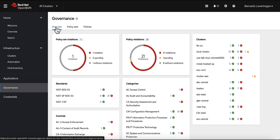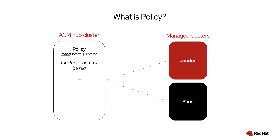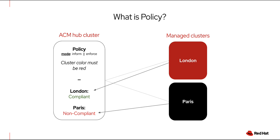But what is a policy? Let's begin with a basic example. A policy can express the desired state for a specific configuration within a cluster. It can inform or enforce the desired configuration. For example, this policy states that cluster color must be red. If the configuration in the policy does not match the actual configuration of the cluster, the cluster would be designated as non-compliant.